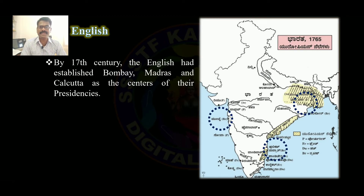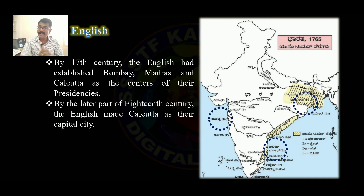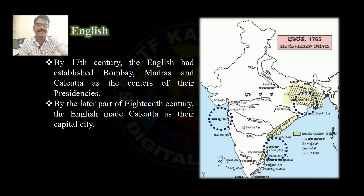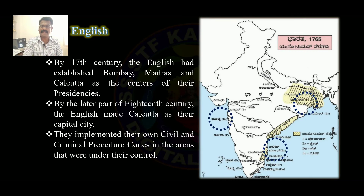Charles II gave Bombay as an annual rent of £10 a year to the East India Company in 1668. In 1690, the English purchased three villages named Sautanati, Kalikatta, and Govindapura on the banks of the Hooghly River and built Fort William. The city of Kalikatta grew around this fort. By the later part of the 18th century, the English made Kolkata their capital city and implemented their own civil and criminal procedure codes in the areas under their control.